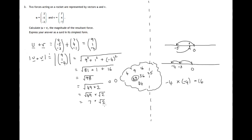So how do we write 7 times root 2? Well, 7 times x is written 7x, so in a similar way 7 times root 2 would be written as 7 root 2. And there's the magnitude of the sum of u and v written as a surd in its simplest form.